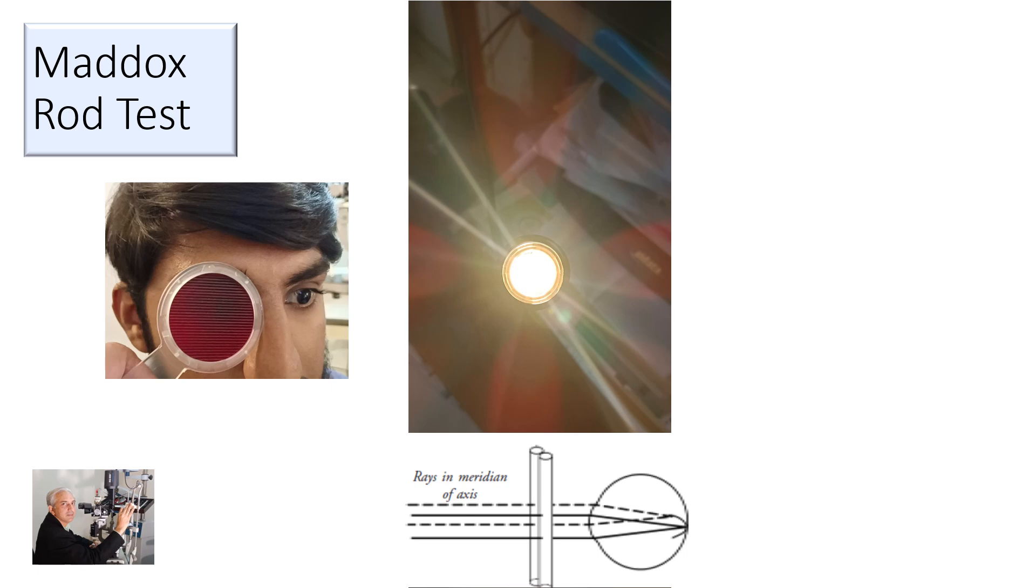Here you can see what the Maddox rod actually is. These are the reddish cylinders placed parallel to each other, and the orientation will decide how this light looks through them.